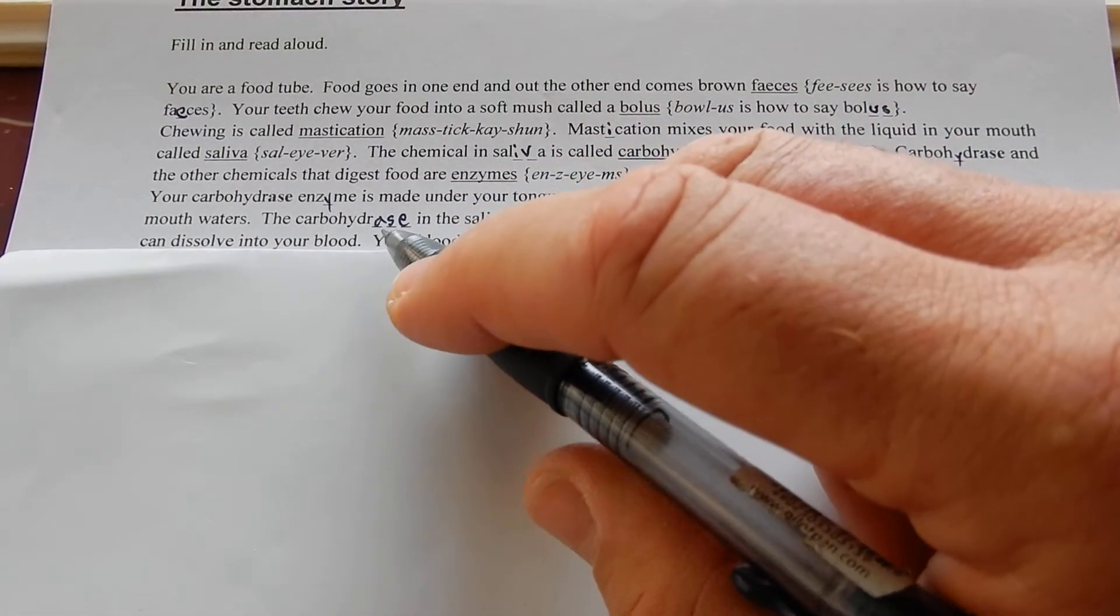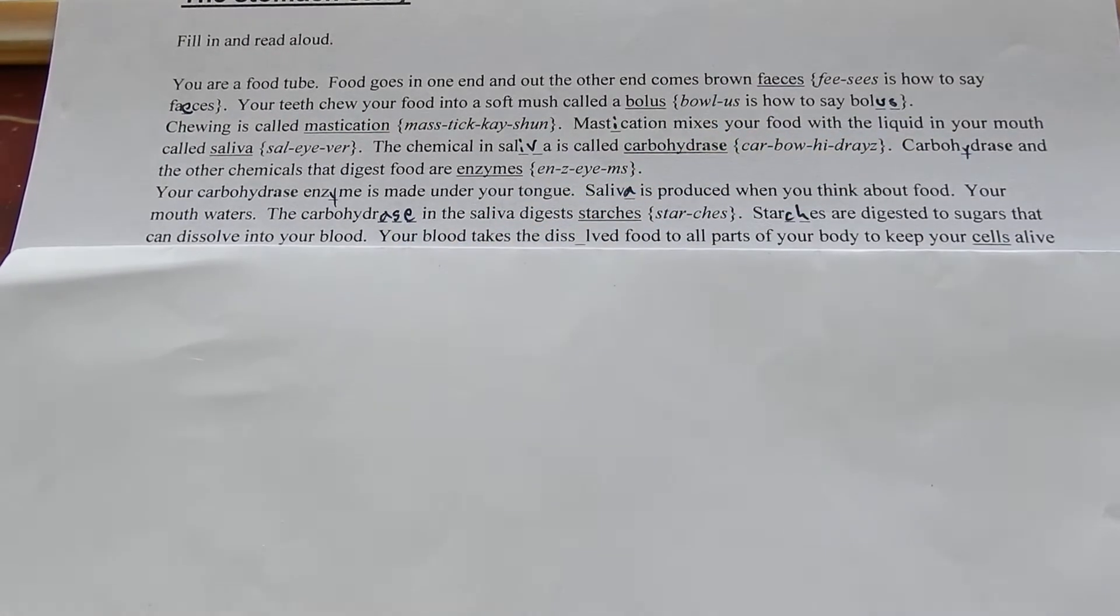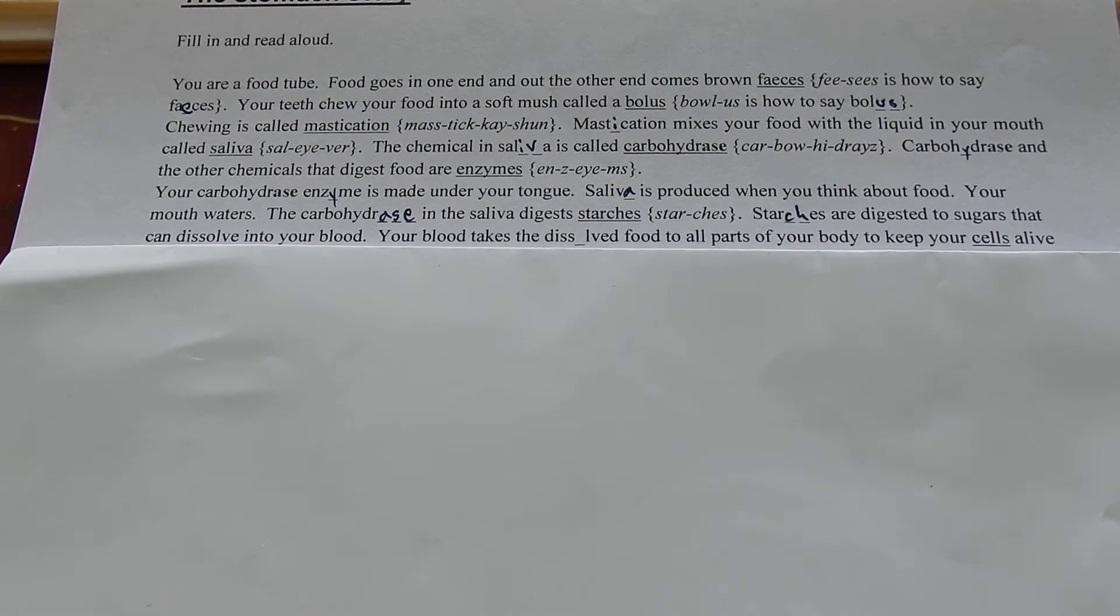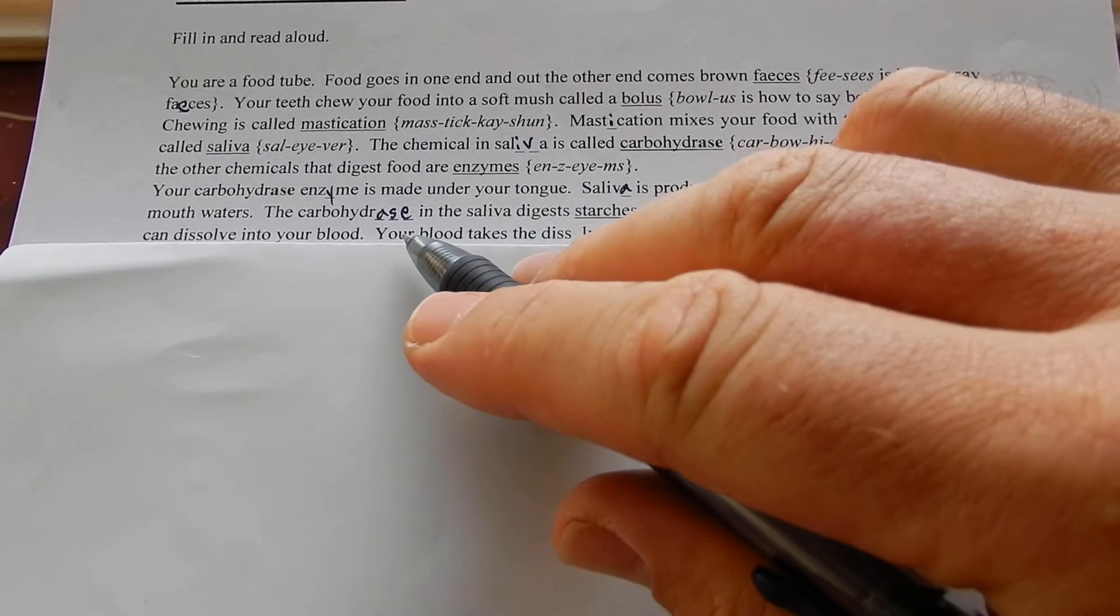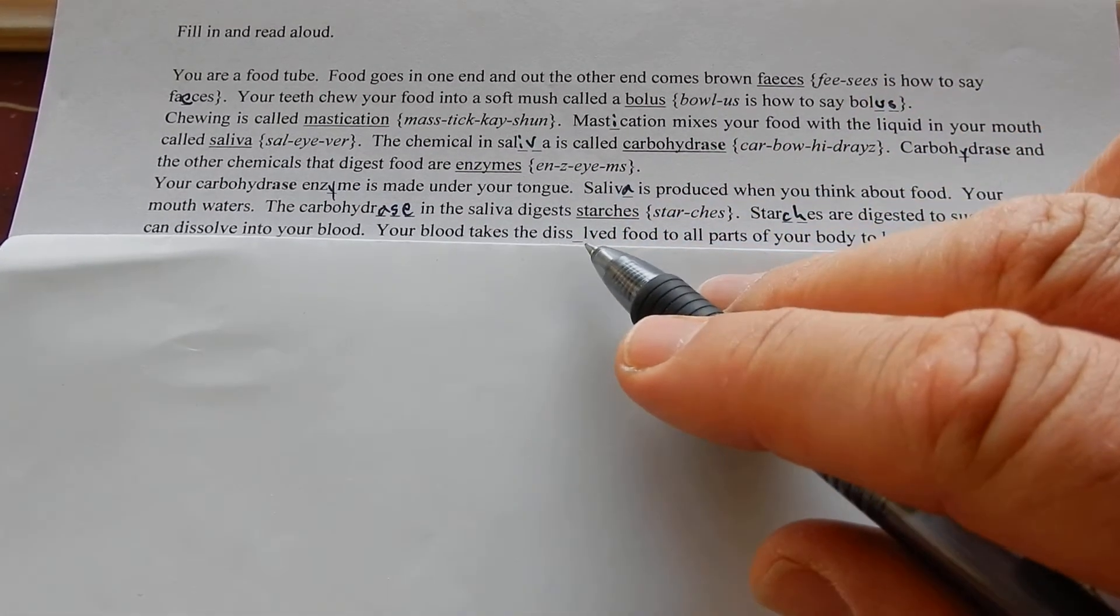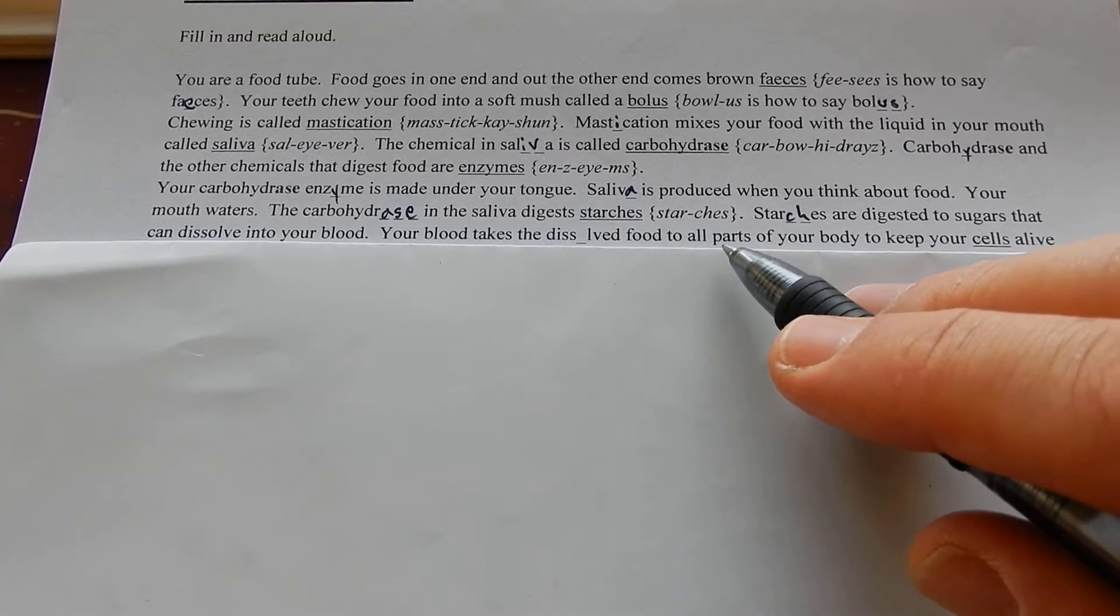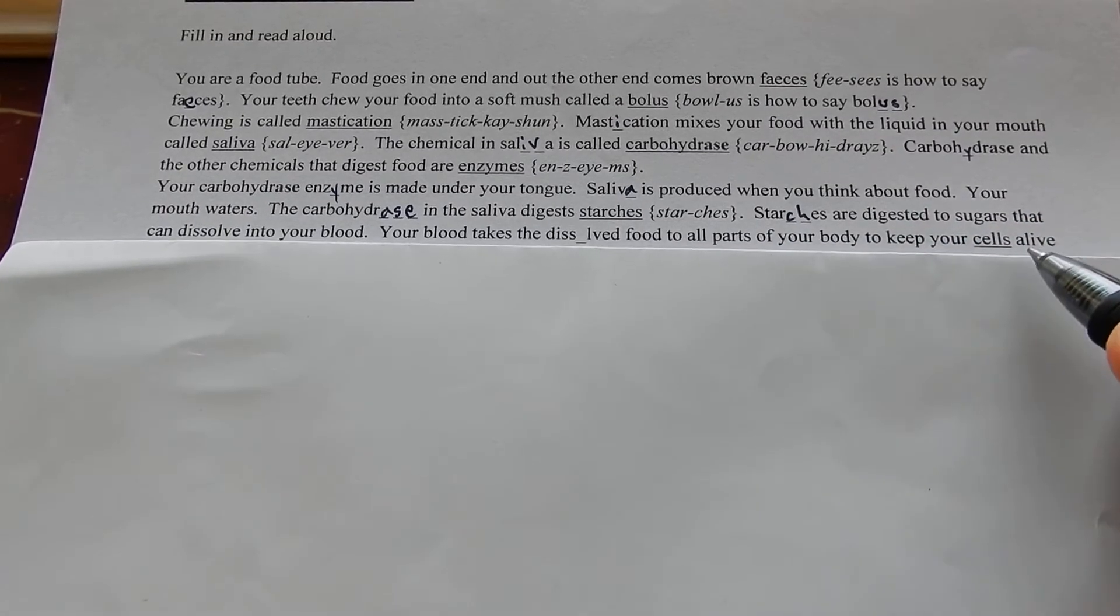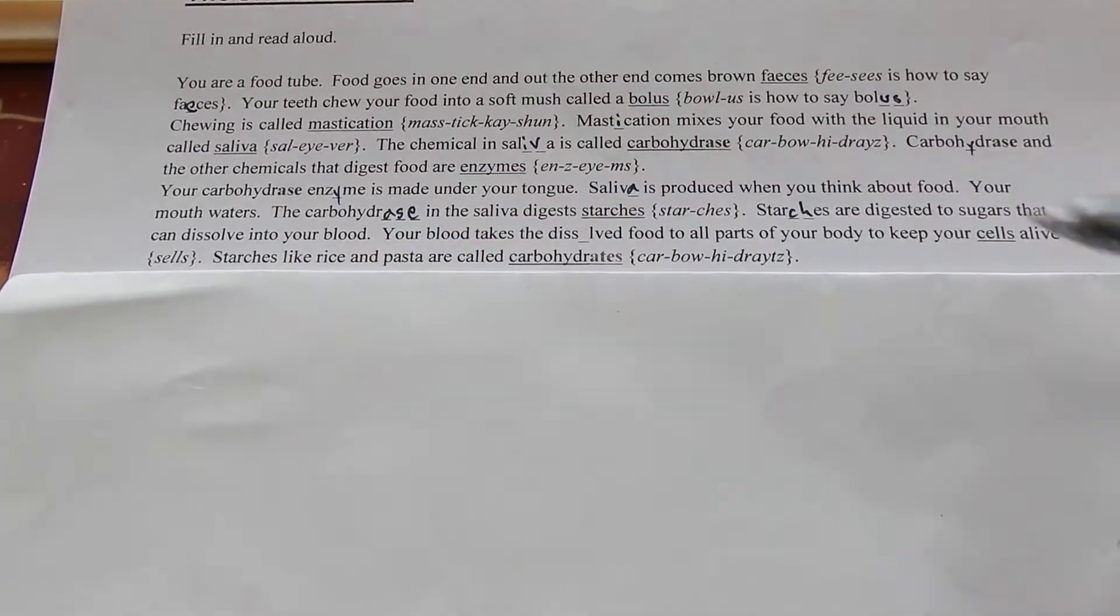Starches are digested to sugars that can dissolve in your blood. The whole point of eating and digesting is so you can get chemicals into your blood to keep you alive, to let you grow, be happy and healthy. Your blood takes the dissolved food to all parts of your body to keep your cells alive.